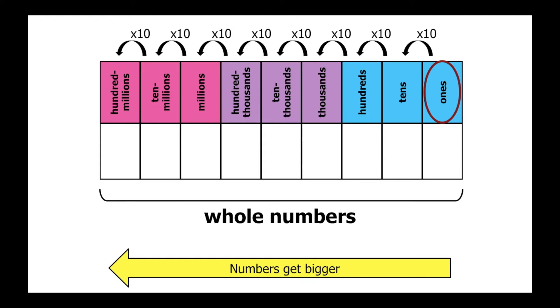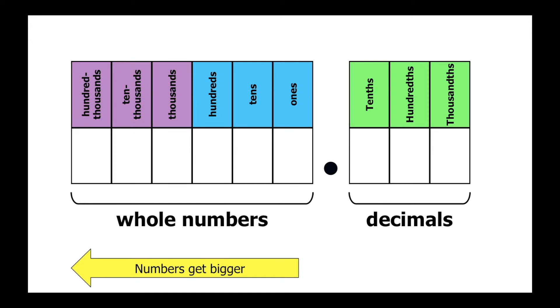Now let's look at our place value chart when we add decimals to it. The first thing that you'll notice is that we have what we call a decimal point, and it separates the whole number values from the decimal values. Notice that the decimal point is right after the ones place.